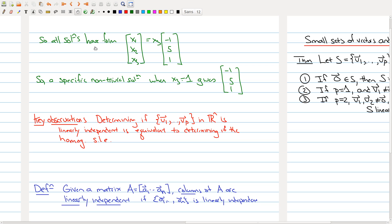Welcome back to the second part of lecture 7. In our last examples we showed when a set of vectors was linearly dependent and when a set of vectors was linearly independent.